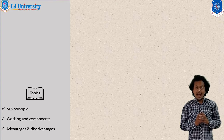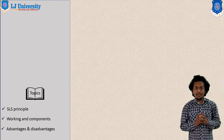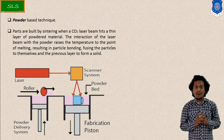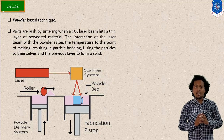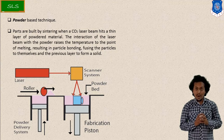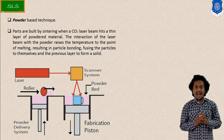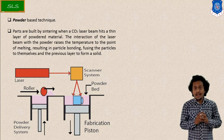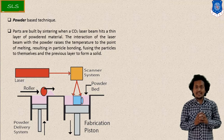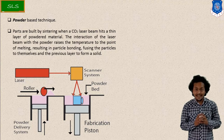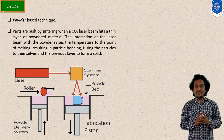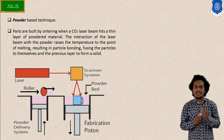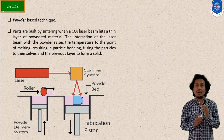Let us start our discussion on SLS process, that is Selective Laser Sintering. This process — short form SLS — is based on the powder category, meaning the raw material is used in the form of powder. As per the name, laser energy is used to produce heat. This laser generates heat energy, which is used for sintering — the settling and fusing of the powder.